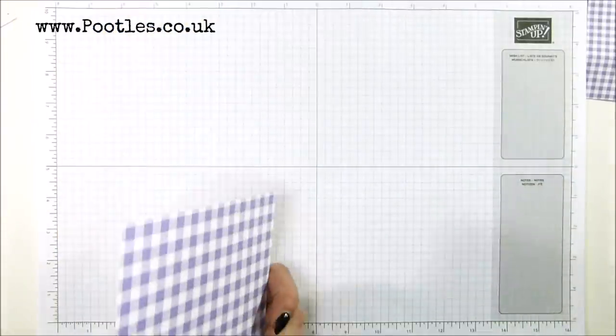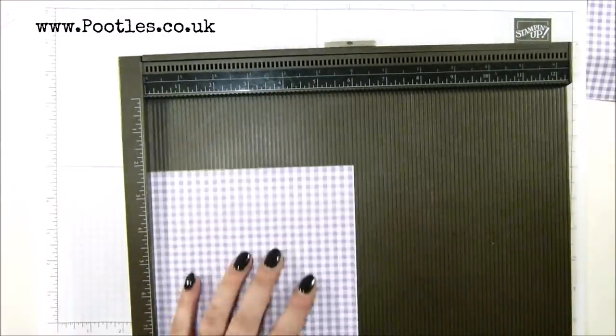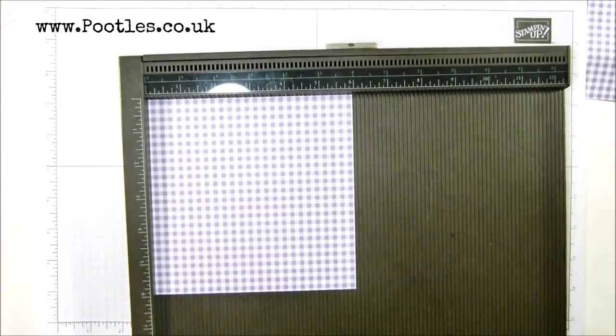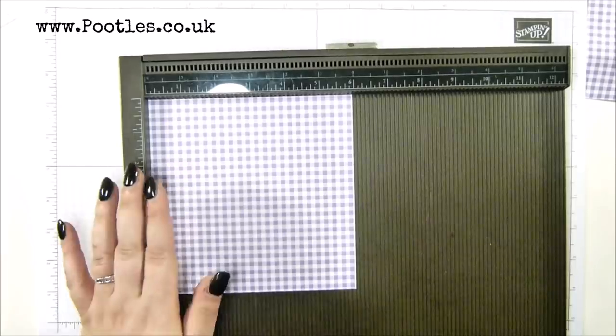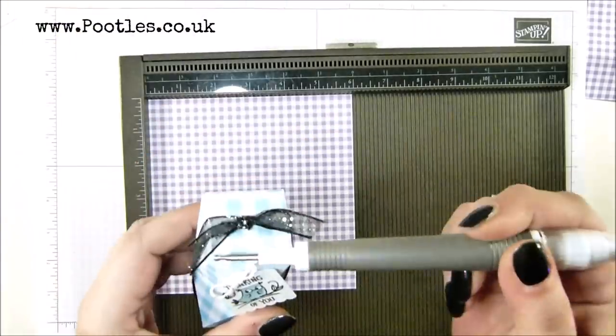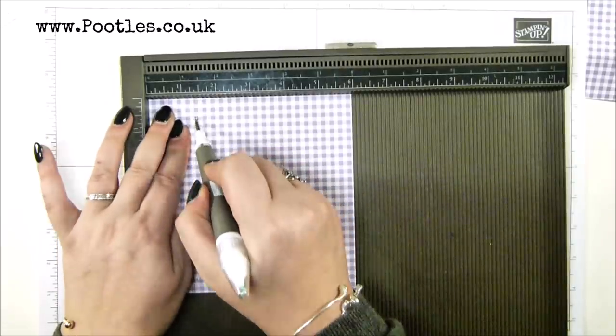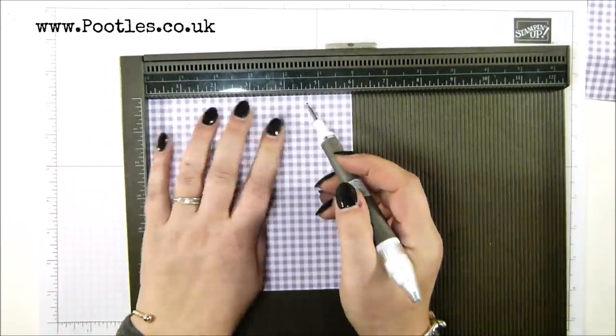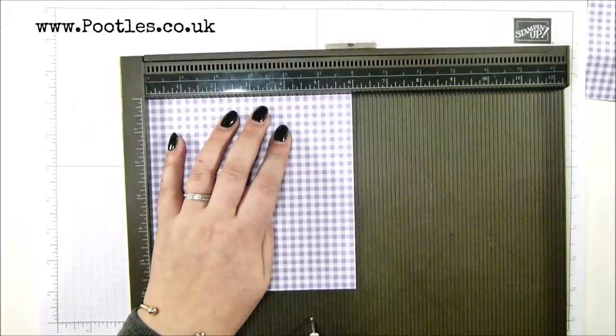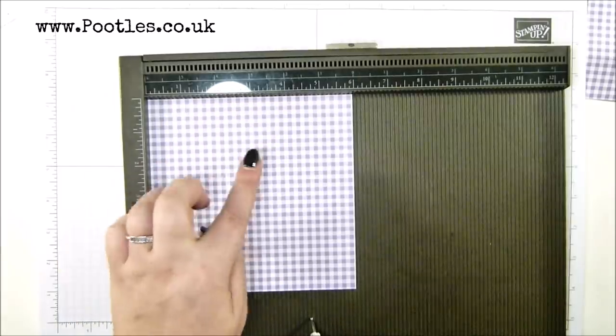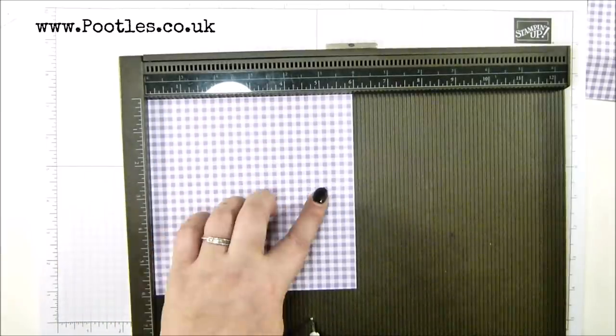So six by six inches. If you work in metric, trim your paper down to 15 by 15 centimeters. And we're going to work on this score line here and this one here first. So one and three eighths of an inch, four and five eighths of an inch. So in metric, that's three and a half and 11 and a half.